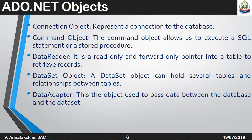ADO.NET objects include the following: a connection object, which represents a connection to the database; a command object, which allows us to execute a SQL statement or stored procedure; a data reader, which is a read-only and forward-only pointer into a table to retrieve records; a data set object, which can hold several tables and relationships between tables; and a data adapter, which is used to pass data between the database and the data set.